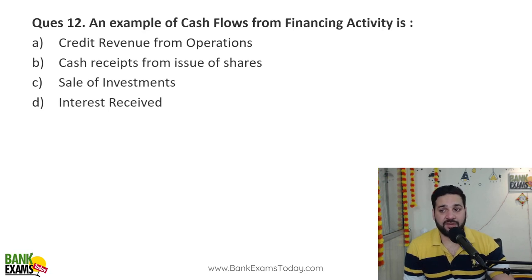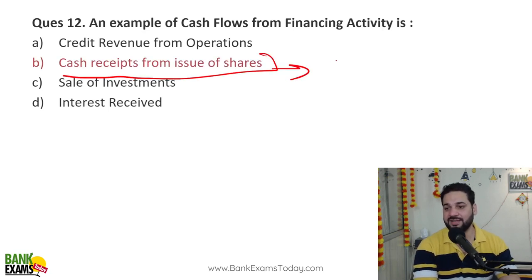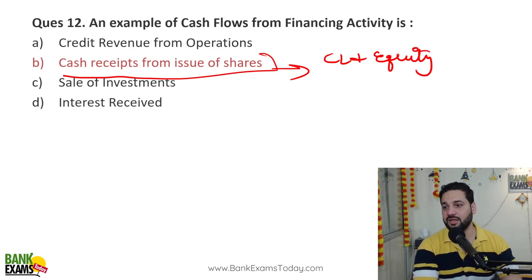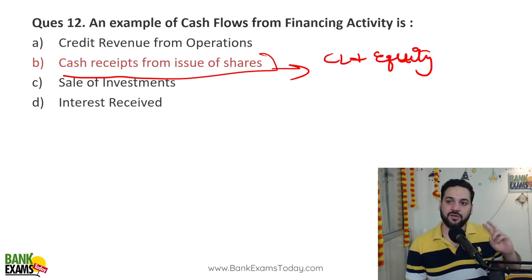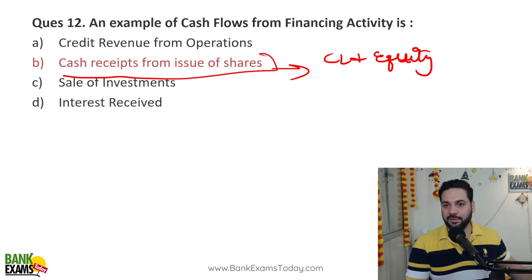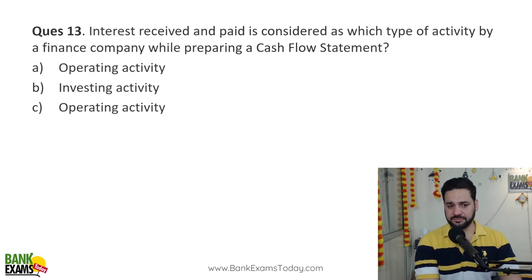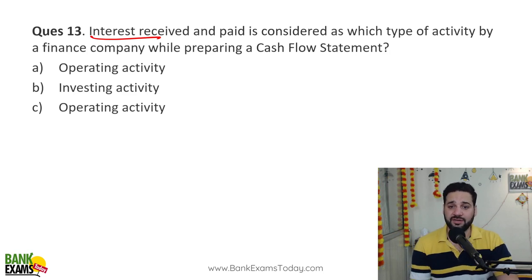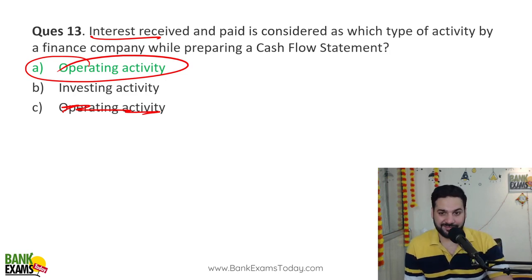An example of cash flow from financing activity is cash receipts from issue of shares — this is a financing activity because it is directly related to equity, specifically non-current liabilities and owner's equity. To summarize: investing activity is related to non-current assets, operating activity is day-to-day business, and financing activity is related to non-current liabilities and owner's equity. For a finance company, interest received and interest paid is considered an operating activity — it is repeated in exams that for a finance company, interest is an operating activity.